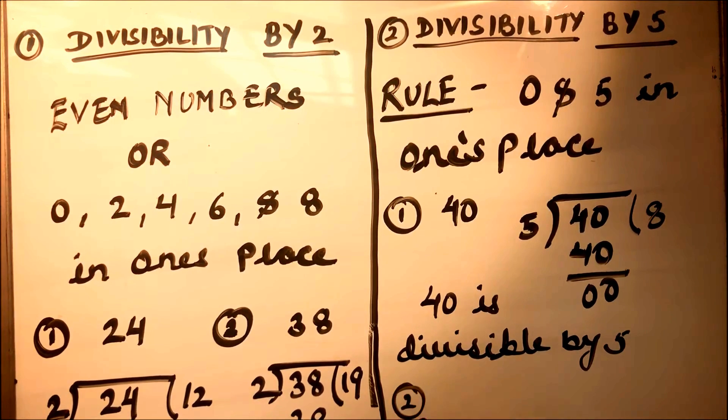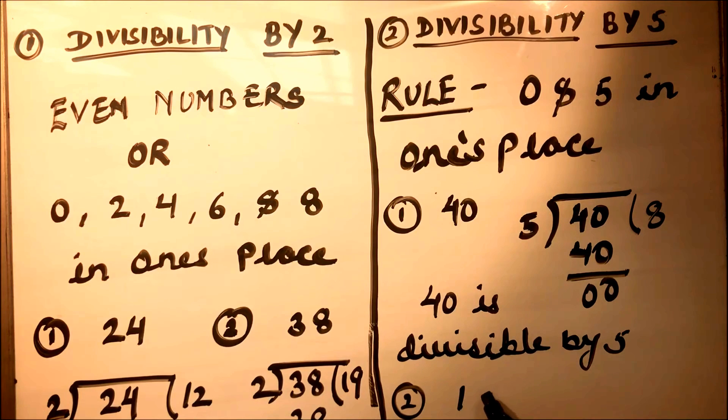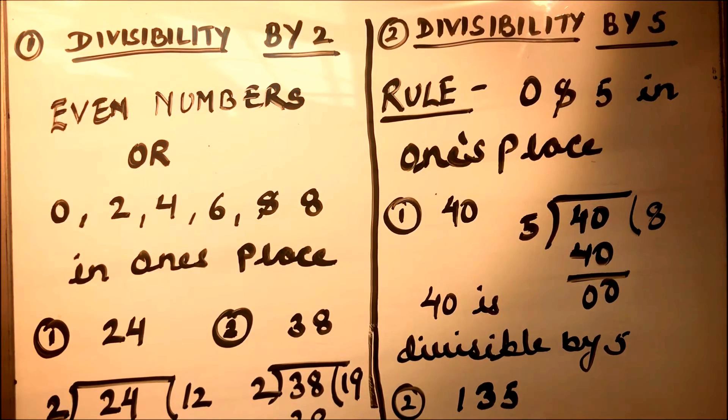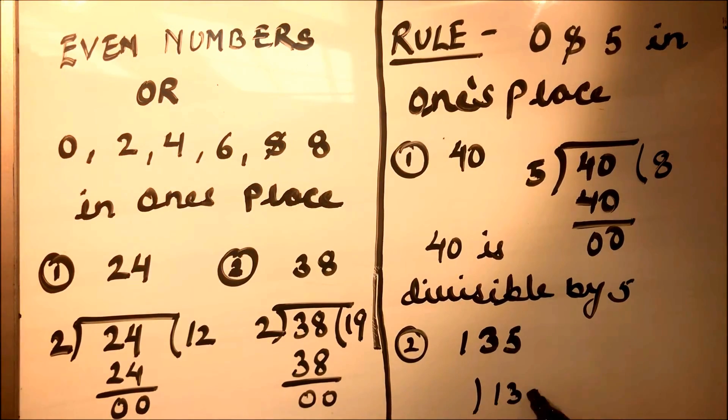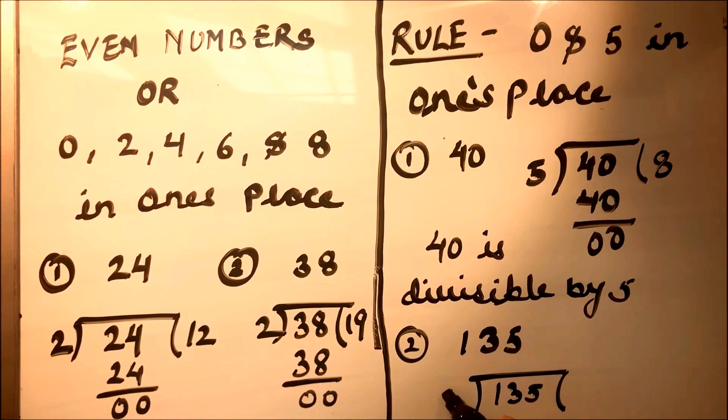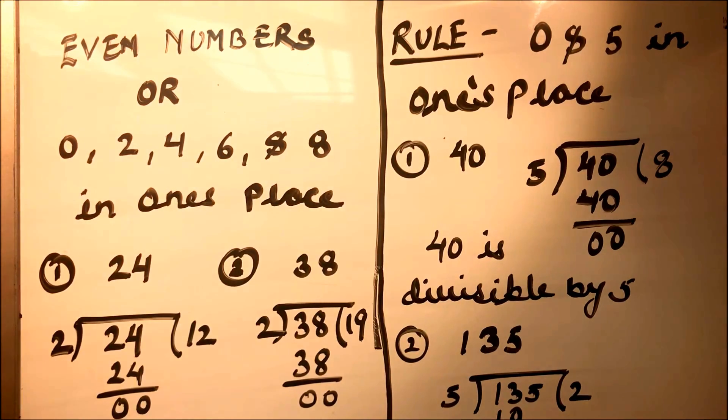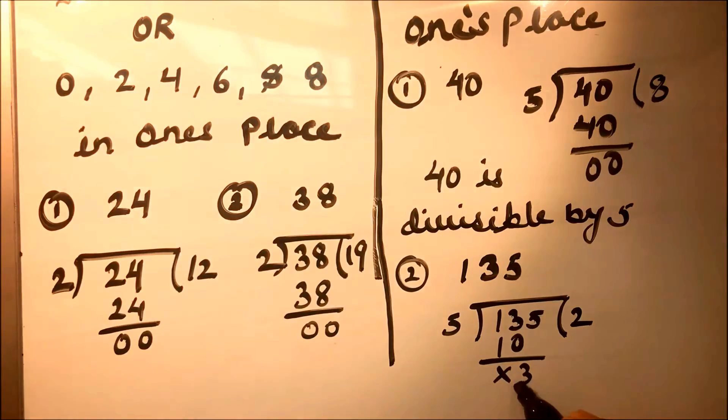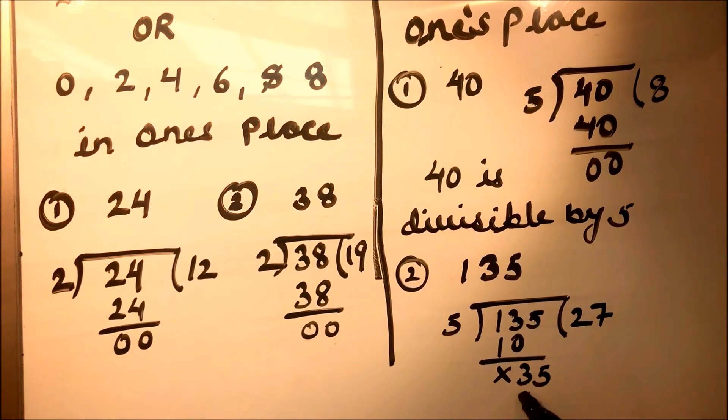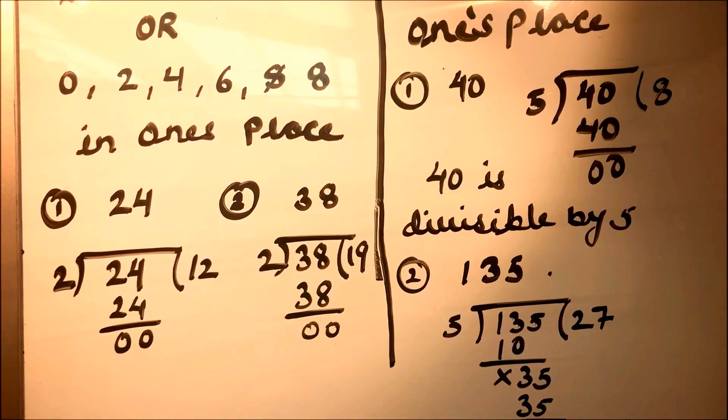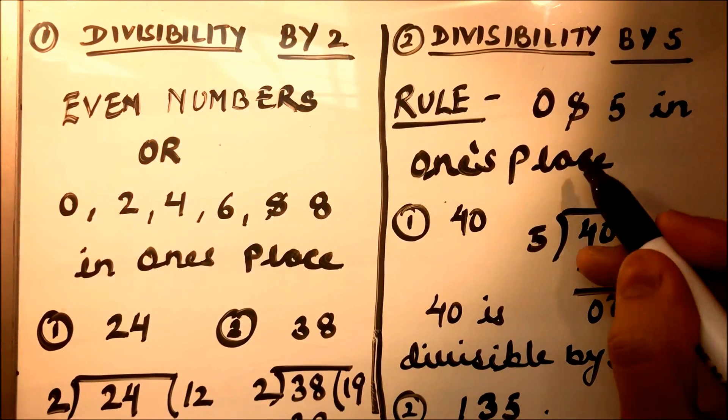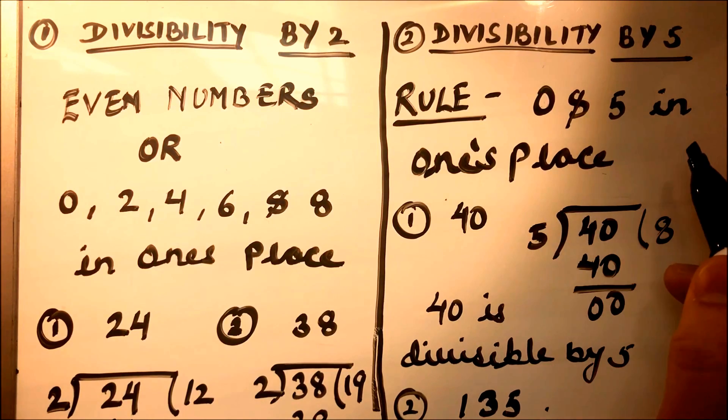Let's take another example, a bigger number. Let's take 135 and check this. If we divide 135 by 5, what we'll get is 5 times 2 is 10, and then 35 which is 5 times 7. So we got the answer as 27. We see that 135 is also divisible by 5. So all numbers having 0 and 5 in their ones place are divisible by 5.